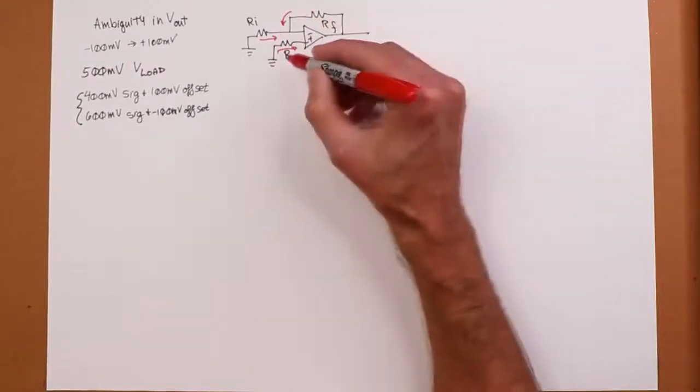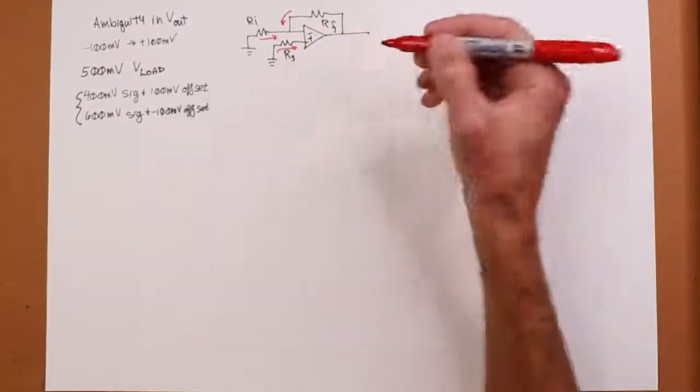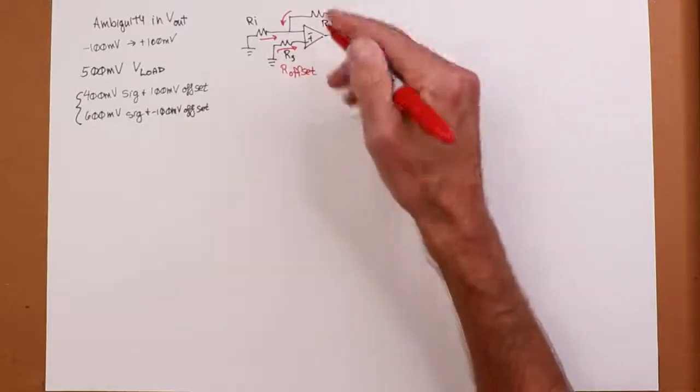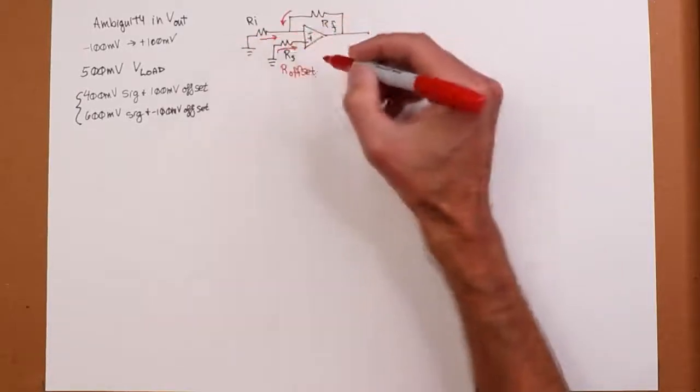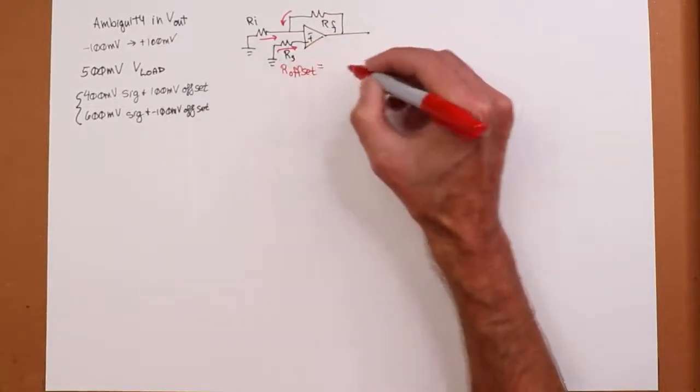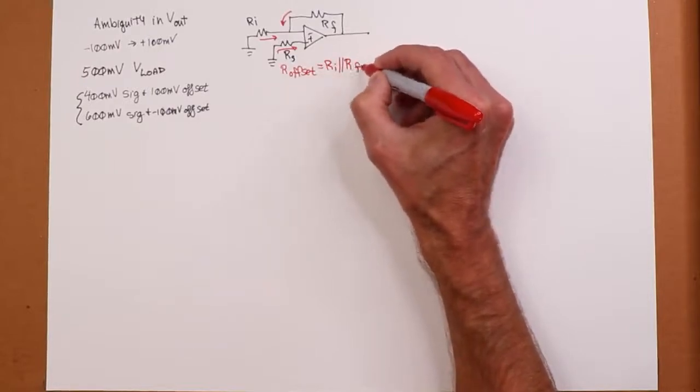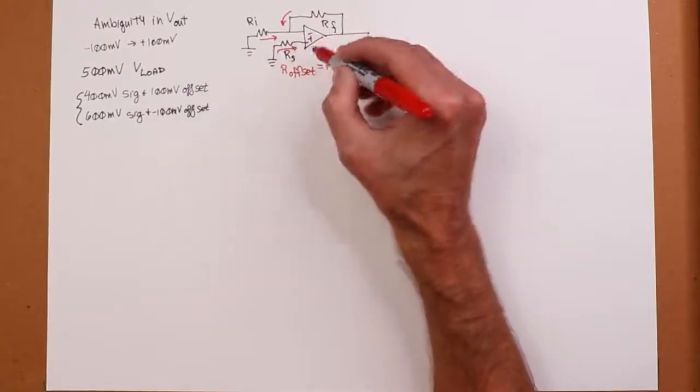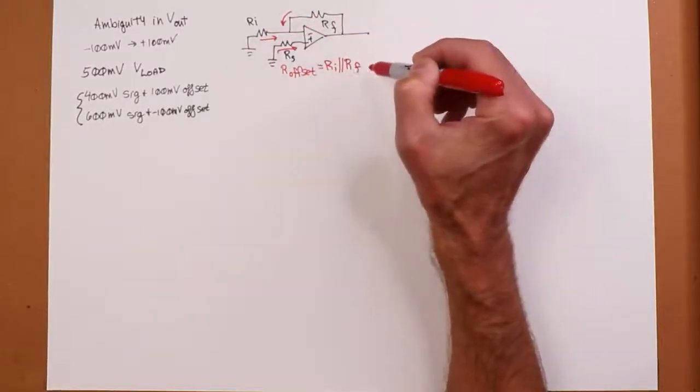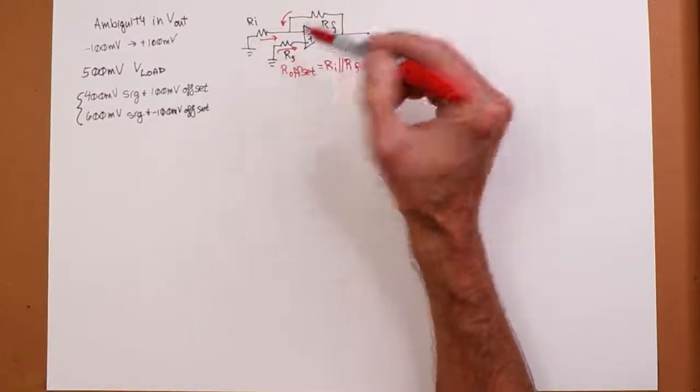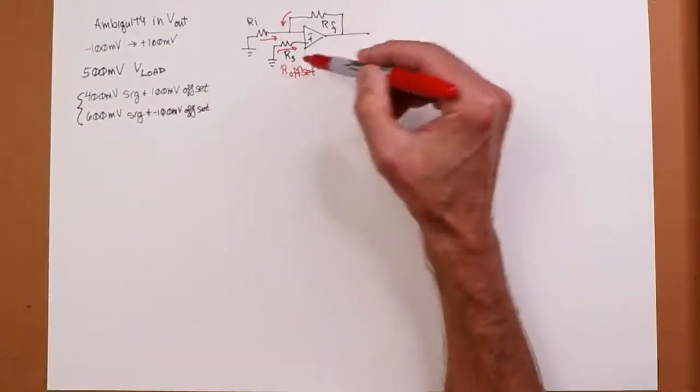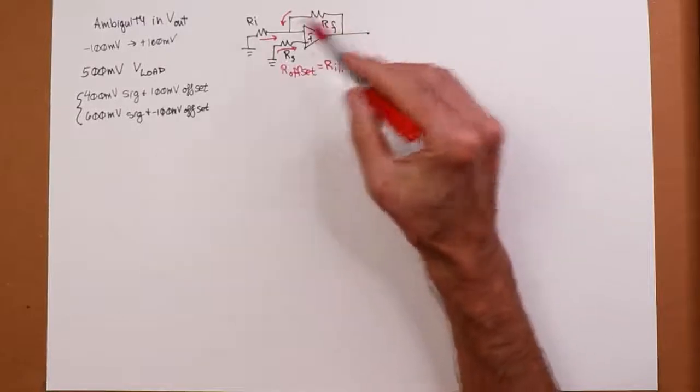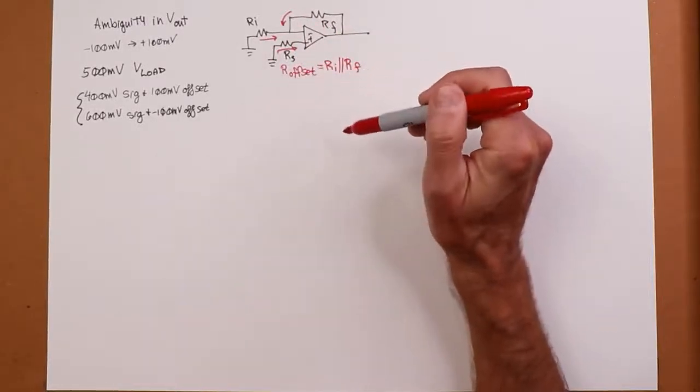In other words, I want to make sure that the resistance seen from the plus input to ground is the same as from the minus input to ground. In other words, in a case like this, this RS, which I'm going to call this R offset, because you actually wouldn't need ordinarily that resistor if we had an inverting amplifier, because this would just go to ground and your input would be over here. So I'm just going to call it R offset. You want to set that equal to RI in parallel with RF.